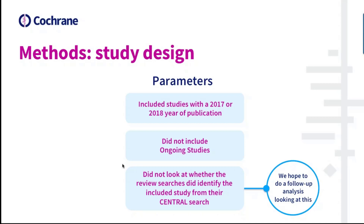Before I go any further I want to take you through a few parameters of this analysis. We focused on included studies with a publication or registration date of 2017 or 2018, because we want to know how well the CSS is performing currently using evidence from recent years where the routines and processes I've described were in place. We focused our efforts on references to included studies — not references to ongoing studies or studies awaiting classification. We were looking at whether the CSS processes had found the RCT, not whether the study had been found by the search of CENTRAL.